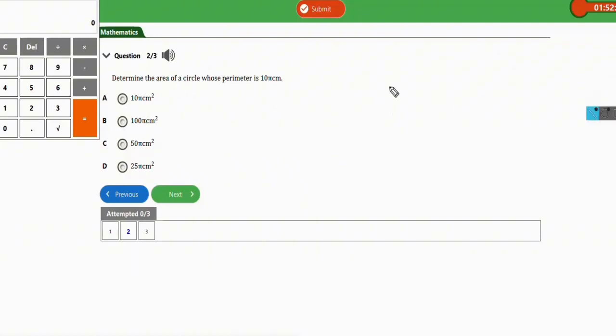For perimeter of a circle, P equals 2πr. All right, so we don't have the radius in this question and we know we have to calculate the area. We can't calculate the area without knowing the radius. Area of a circle is πr². So to get the radius from this perimeter, we have 10π equals 2πr. So π will cancel itself. Divide both sides by 2 to make r the subject of the formula. So r will be 5.